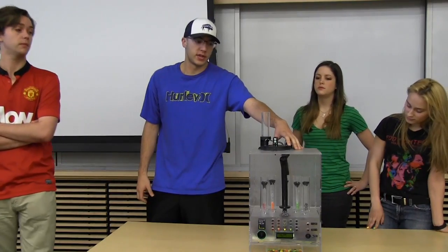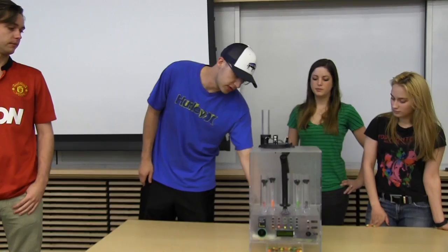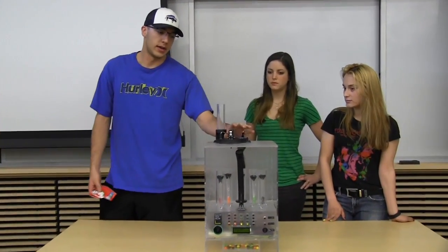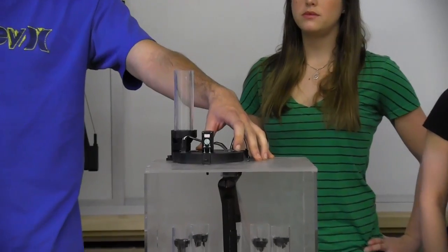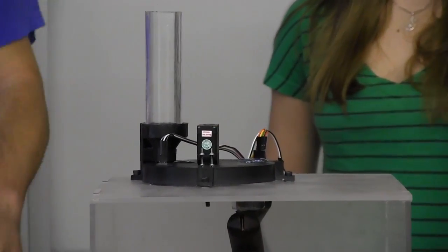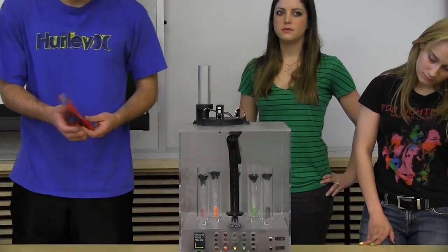How the sorting station essentially works is there's a hopper here where you can load Skittles into. It has a servo that will then move it to a color reading sensor. It determines colors, and then it'll drop it into one of the associated bins based on the color that it reads.